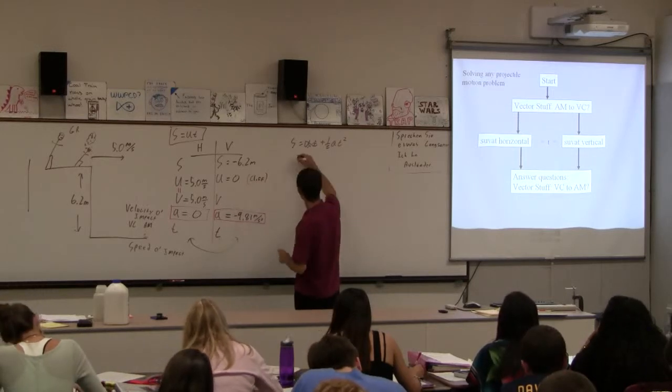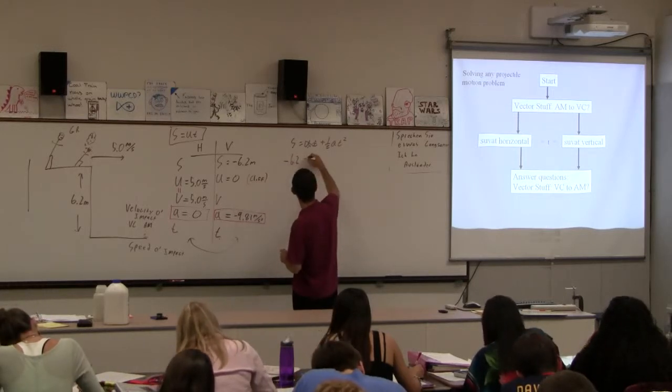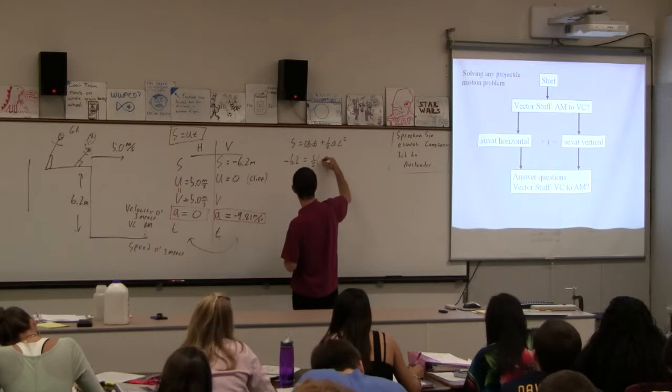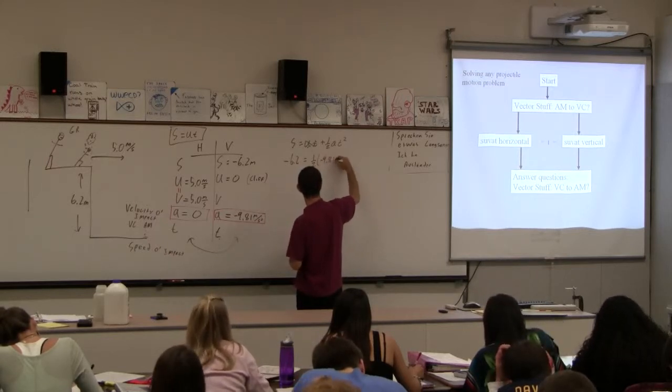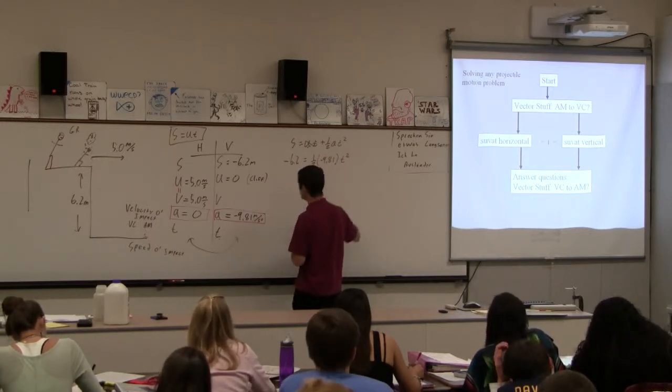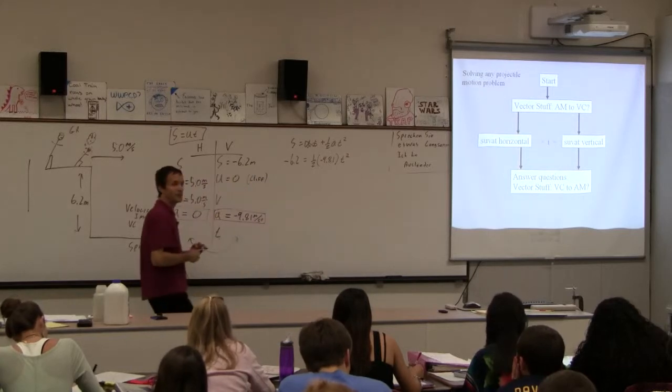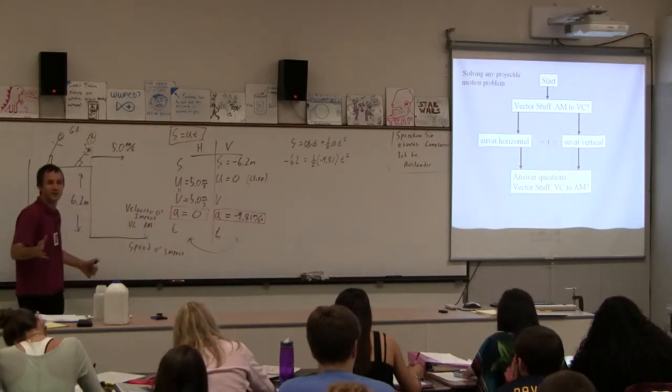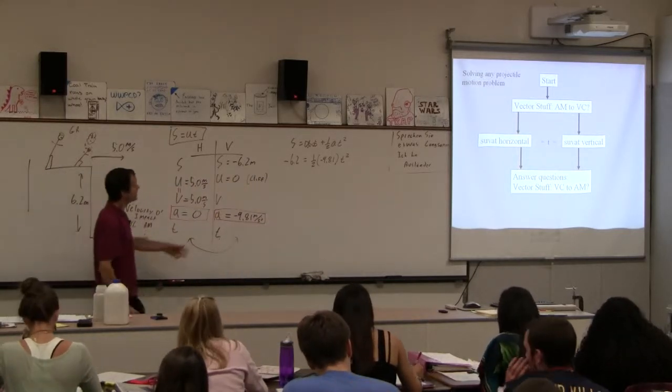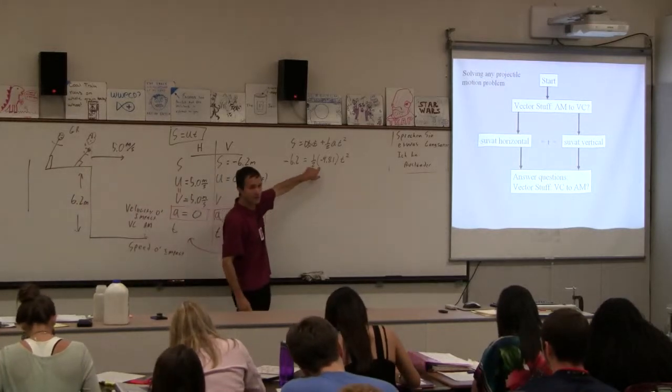For this guy. This is easy to use to solve for time because there is no initial velocity, right? And so I go minus 6.2 is one-half, negative 9.81 T squared. So take your calculator now, because there's nothing else to do, and you're bored, right? Okay. Take your calculator right now and solve that for the T.